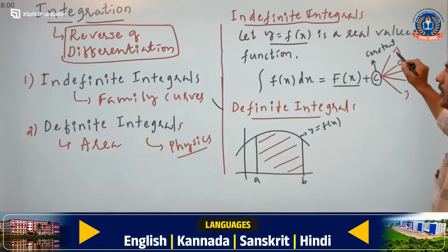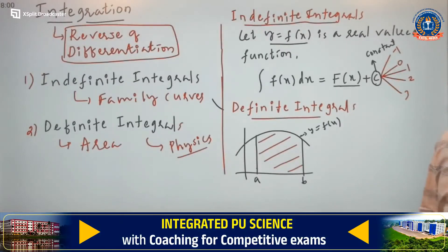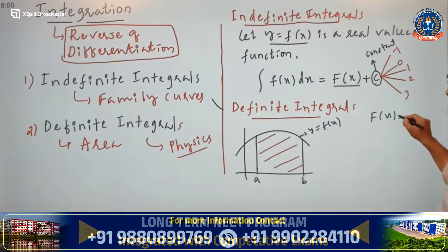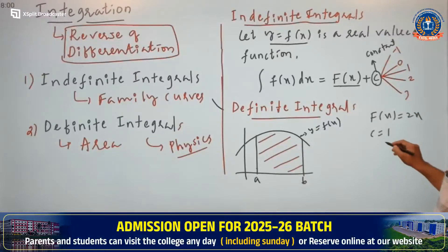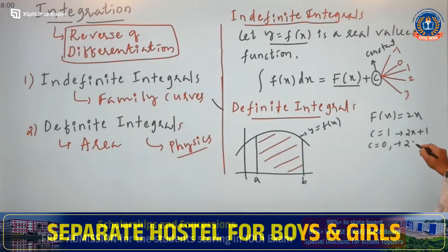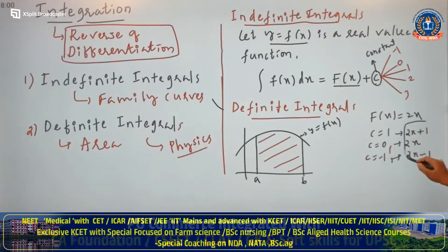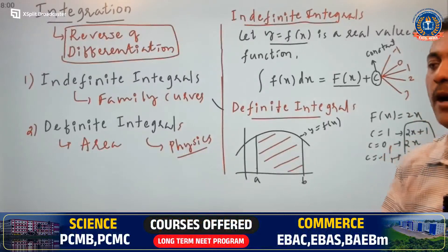The constant of integration c can be minus 1, 0, 1, 2, 3 — anything you can take. When you take different values, what is going to happen? So if our f of x equals 2x, and c equals 1, automatically we get the function 2x plus 1. If c equals 0, another function: 2x. If c equals minus 1, the function will be 2x minus 1. So that is how it represents different curves — that is why the indefinite integral represents a family of curves.